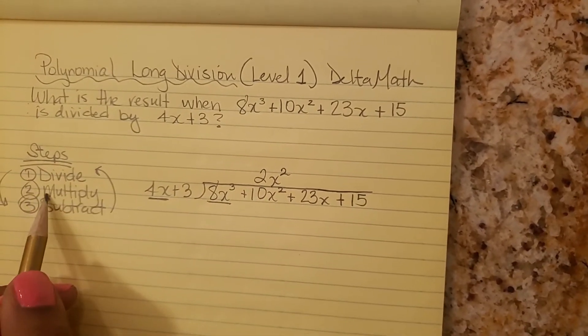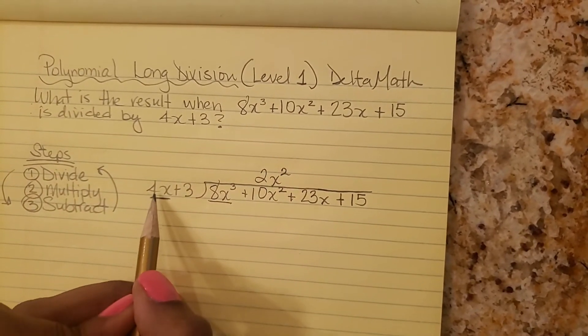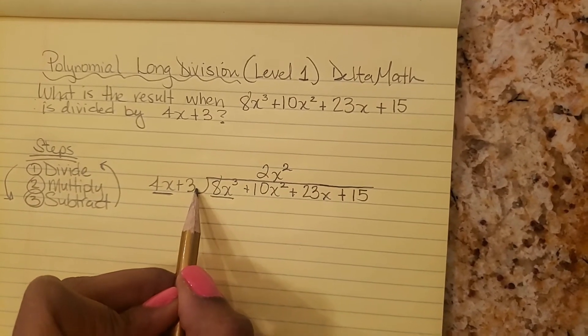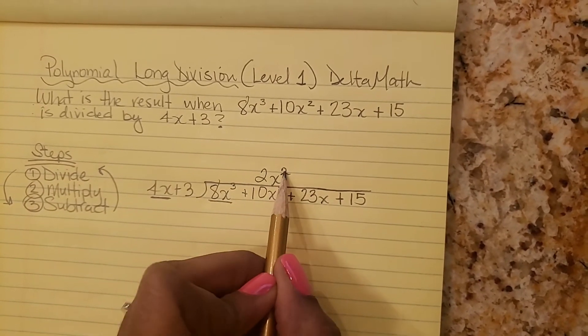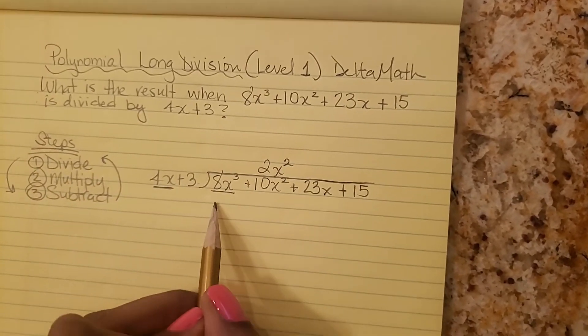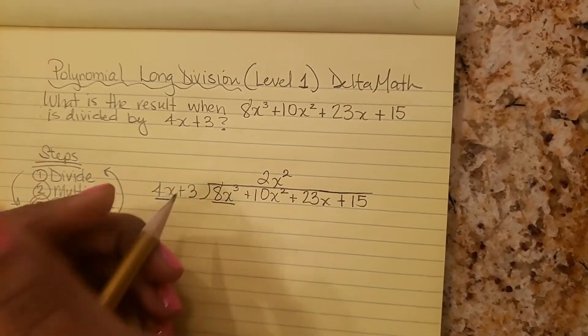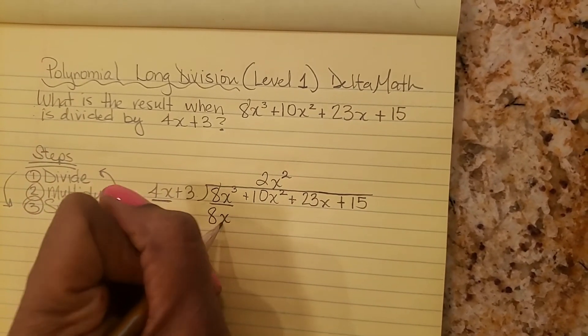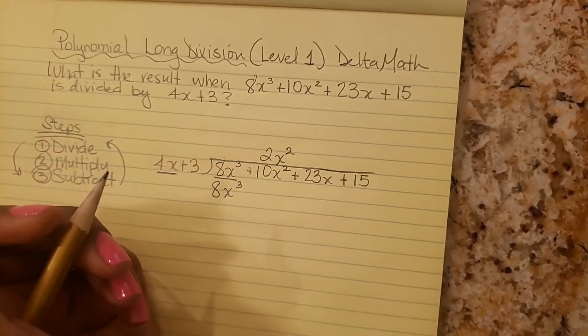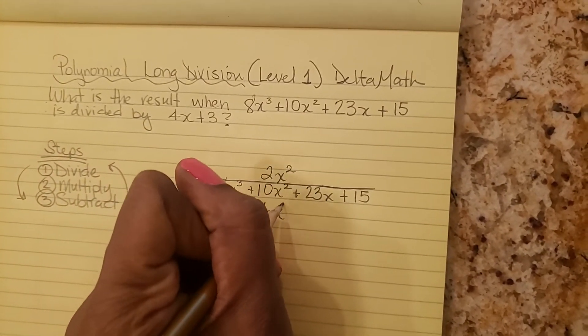The next step is to multiply. So we're going to multiply 2x squared times, not just the 4x, but the whole thing, 4x plus 3. So 2x squared times 4x plus 3 and our answer goes under here. So what's 2x squared times 4x? 8x cubed. And what's 2x squared times 3? 2 times 3 is 6, so plus 6x squared.